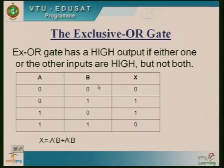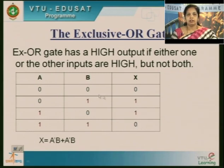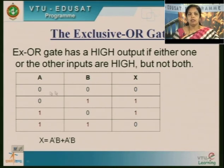For a 2-input XOR gate, with 2 inputs, 2 to the power of 2 gives 4 combinations. So we have 4 combinations in the truth table. The output is 1 if and only if one of the inputs is 1. If both inputs are low, the output is 0. If both inputs are 1, the output is also 0.